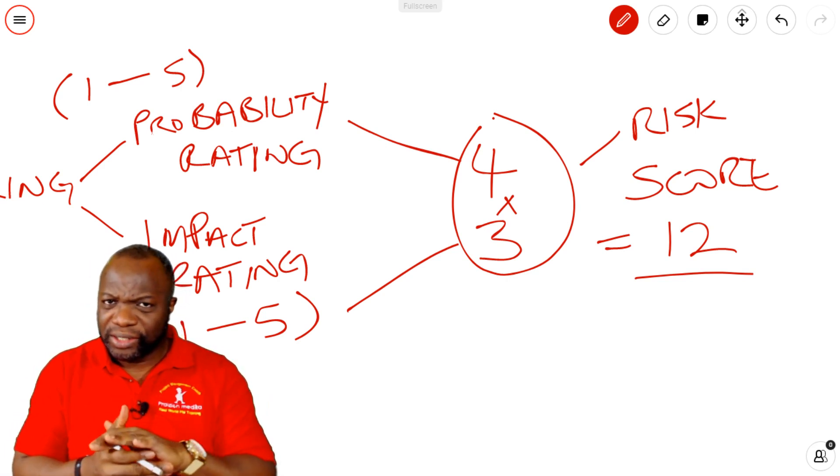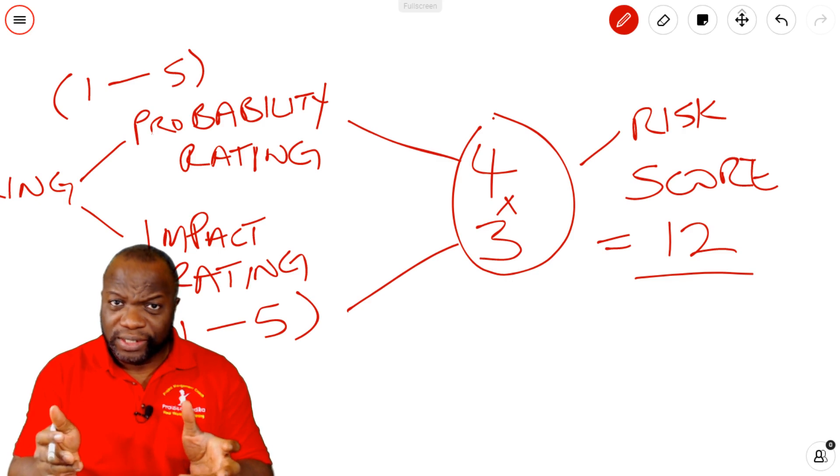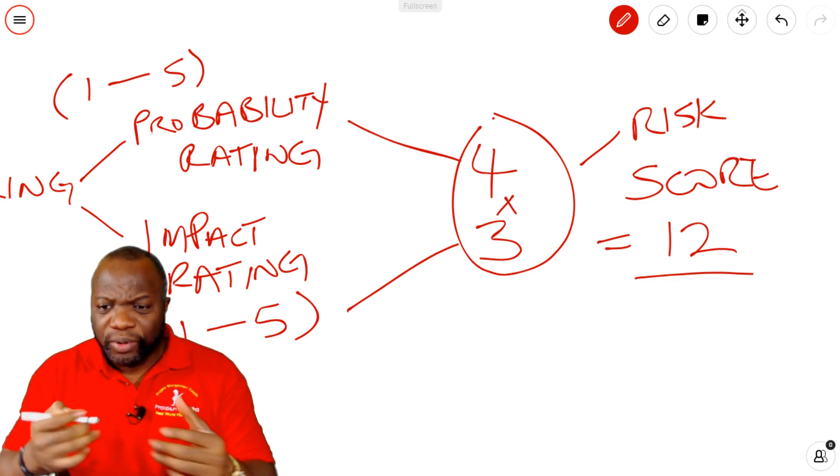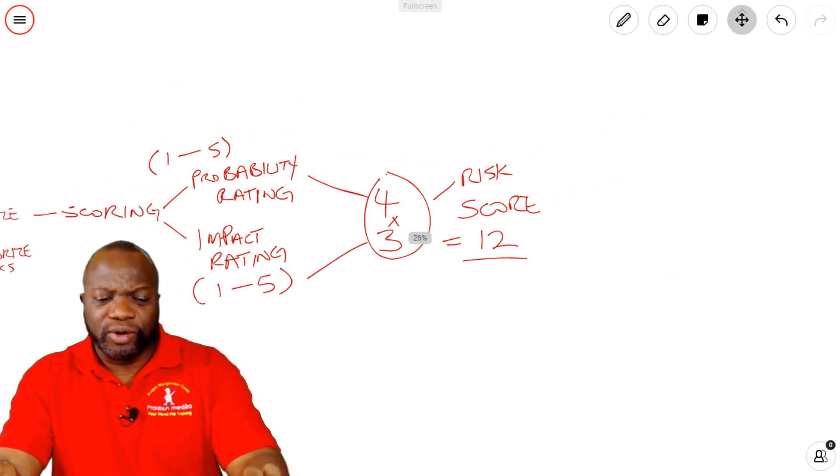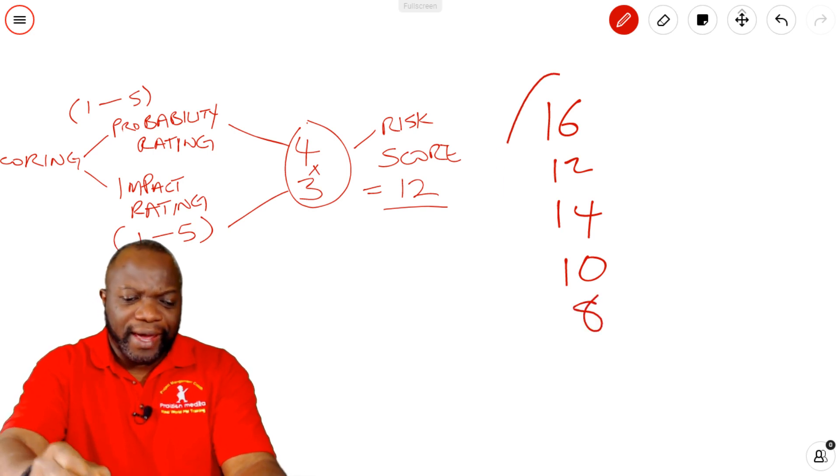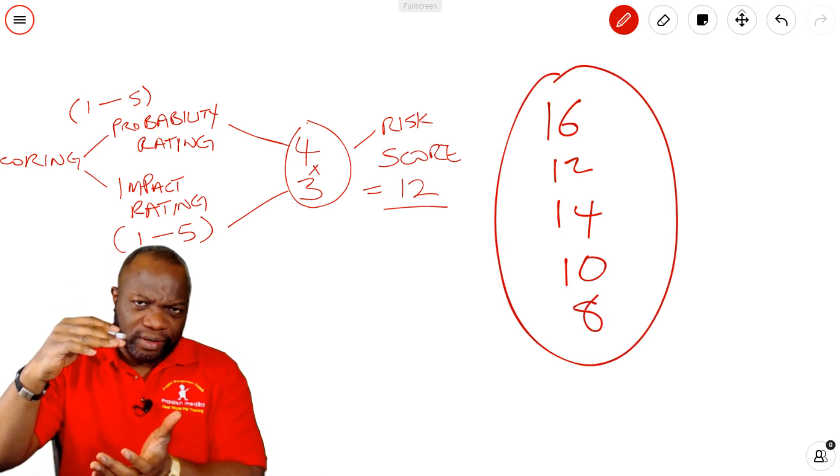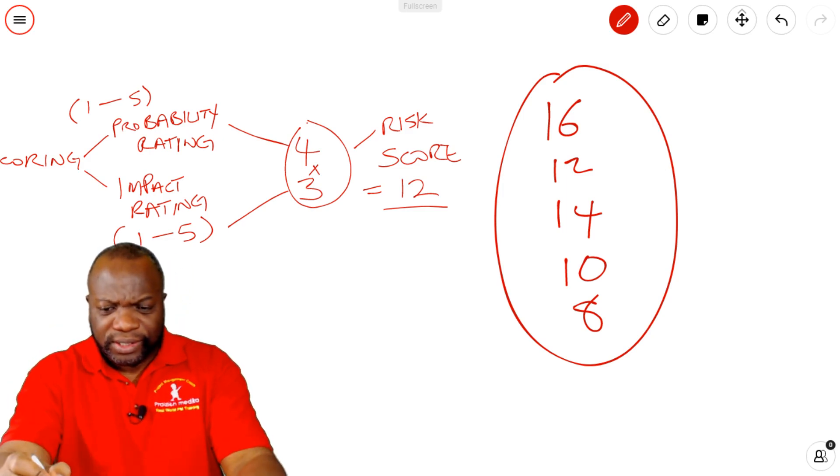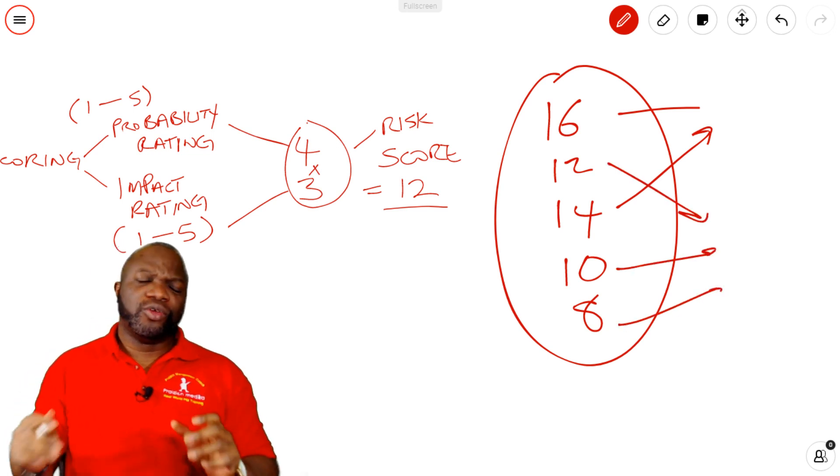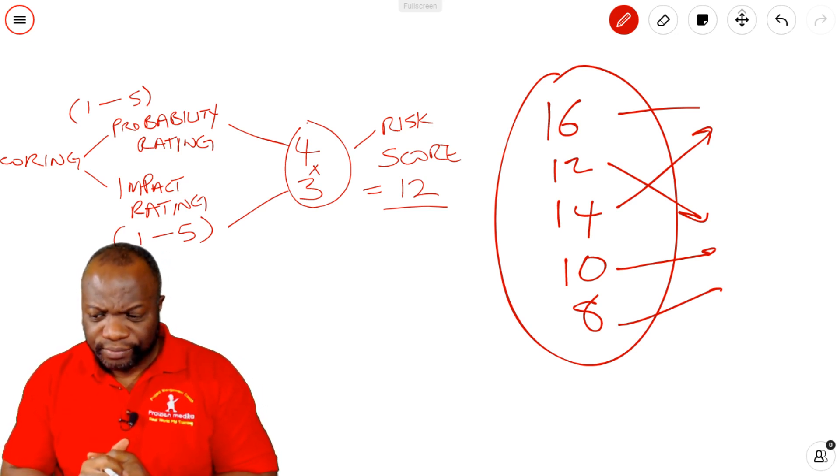This 12 is not quantitative, my friends. There's a misconception that because it has numbers, it's quantitative. No, it's not quantitative. It does not convert over to other projects. It doesn't mean anything on other projects. But for our project, it helps us with the relative ranking of risks. So if we have one that's a 16, one that's a 12, one that's a 14, one that's a 10, one that's an 8, we can rearrange the risks. Rank the risks. So the 16 stays at the top, the 14 goes next, then the 12, then the 10, then the 8, and so on. You use this to order risks.